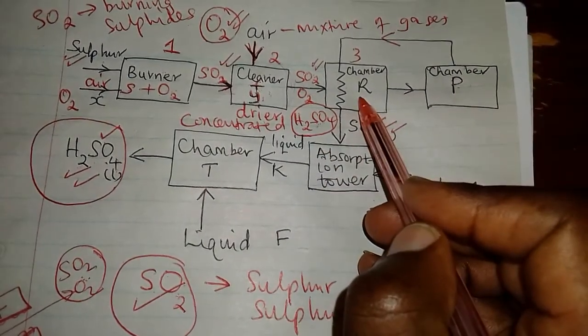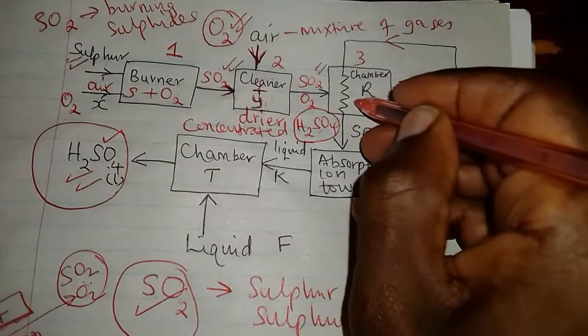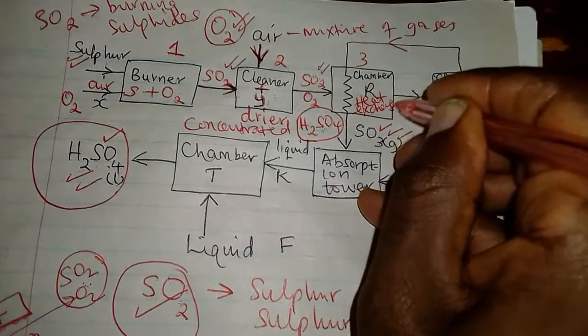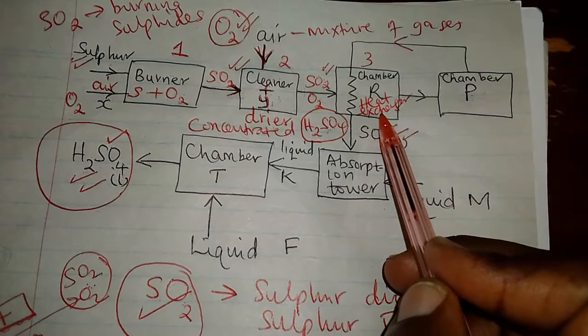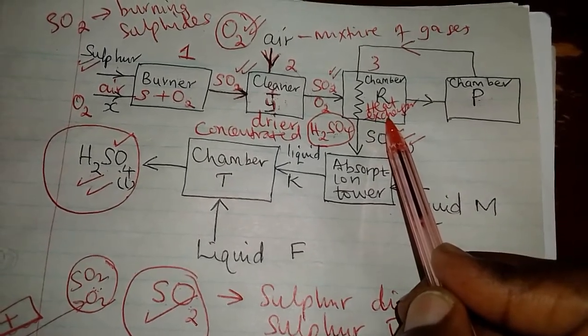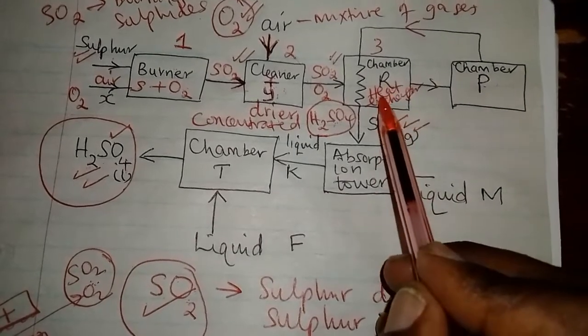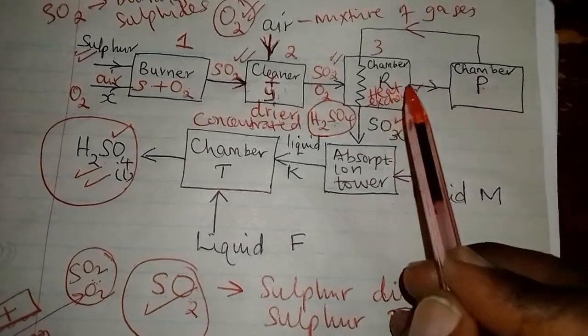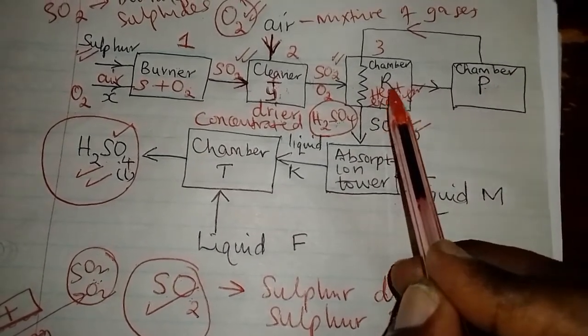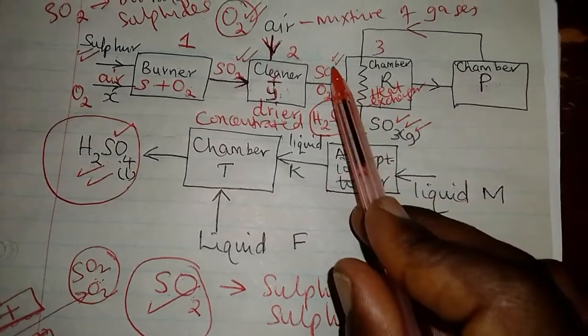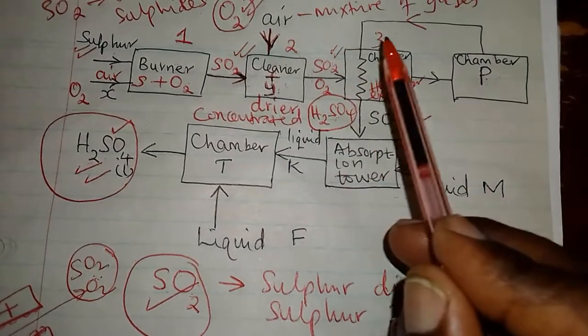Moving to chamber three — the cleaner and dryer are done. In chamber three, the two gases, SO2 and oxygen, are preheated in the heat exchanger. They are preheated so that they can attain a temperature that can facilitate their reaction occurring at a faster rate. The temperature ensures that the particles absorb heat energy, the kinetic energy of the particles of the reactants increases, the motion of the particles increases, they collide more, they end up having more successful collisions, and the reaction gets sped up.